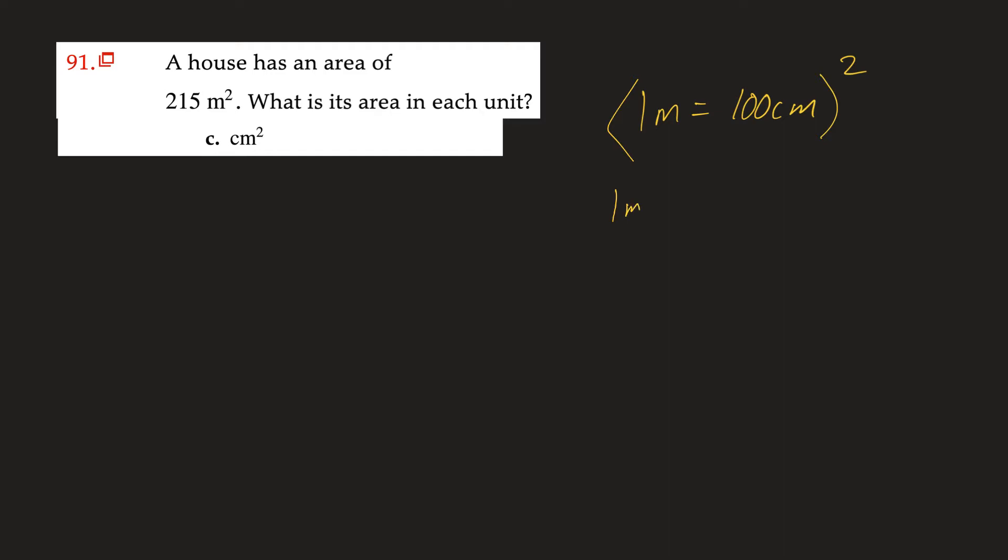So that would be one meter times one meter is equal to 100 centimeters times 100 centimeters. So that's really one meter squared is equal to 10 to the fourth centimeters squared.